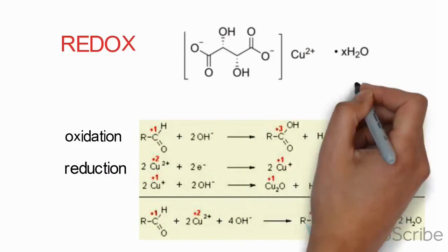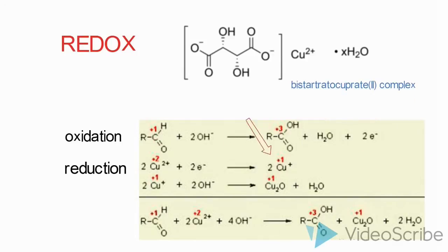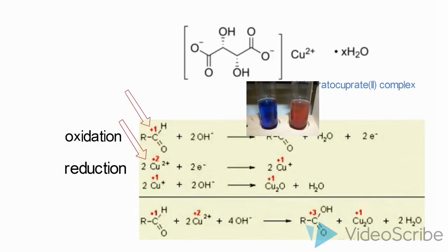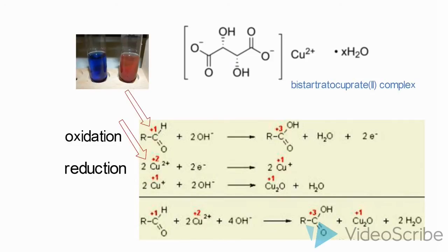The bis-tartrate cuprate complex oxidizes the aldehyde and in the process the Cu2+ ions of the complex are reduced to Cu1+ ions. Red Cu1 oxide then precipitates out of the reaction mixture, which indicates a positive result.